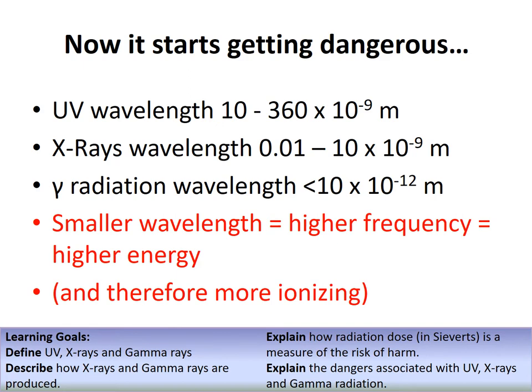UV wavelengths go down to around 10 nanometers (10⁻¹⁰ m). X-ray wavelengths are 0.01 × 10⁻¹⁰ m, and gamma rays are even smaller. A smaller wavelength means higher frequency, which means higher energy transfer. These radiations are therefore more ionizing, and it is this ionization that makes them dangerous.